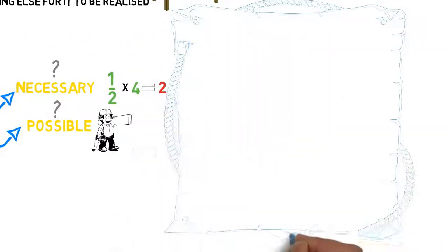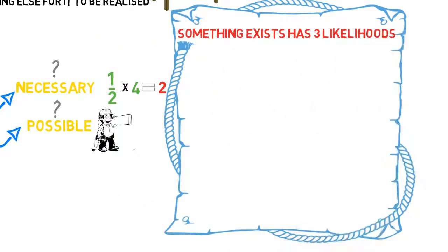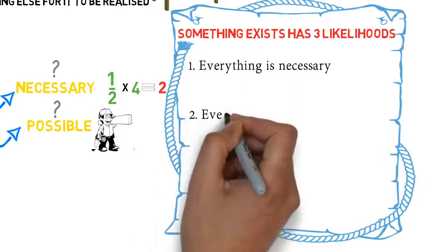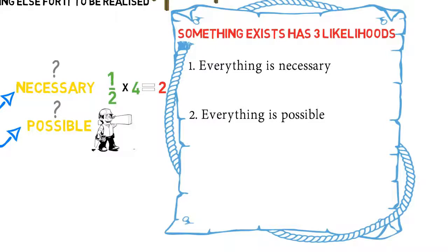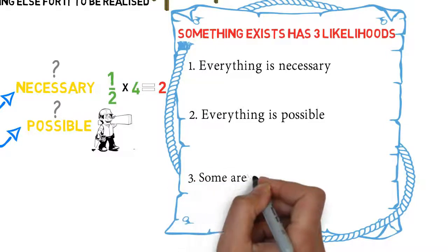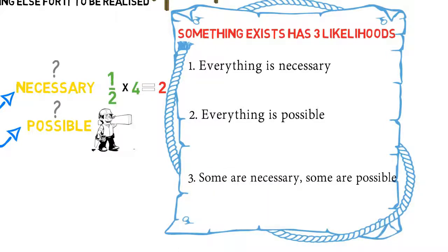So when we say something exists, it leaves us with three likelihoods. Number one, everything that exists is necessary. Two, everything that exists is possible. Or three, some existences are necessary and some are possible.